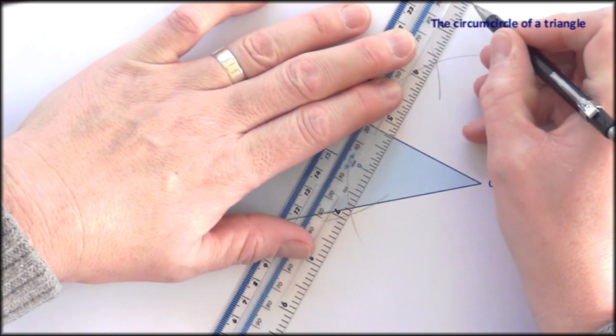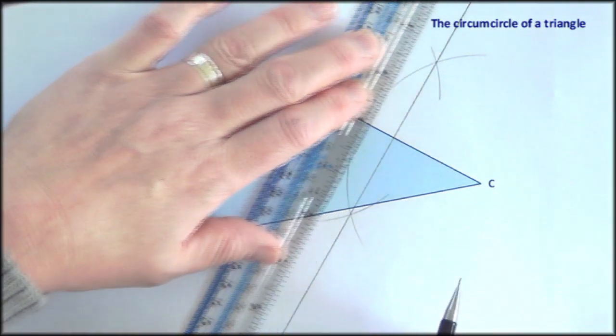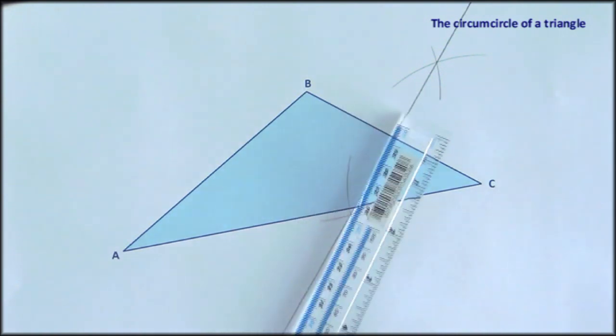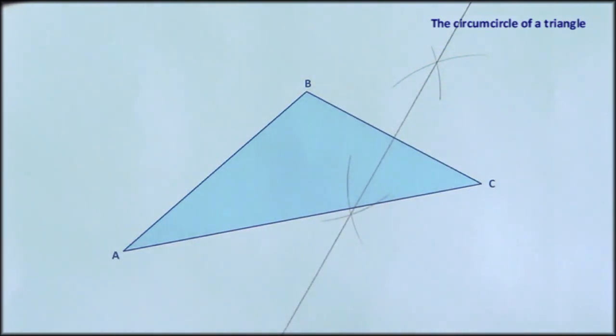It's quite important when you're doing this to make it as long as possible because the centre of this circle could be outside the triangle itself.